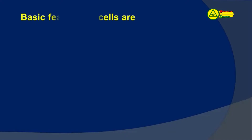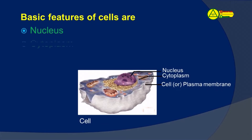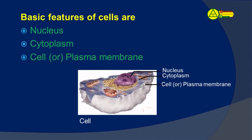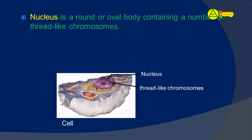These features of cells are: Nucleus, Cytoplasm, and Amoeba. The Nucleus is a round or oval body containing a number of chromosomes.